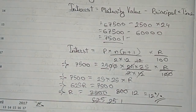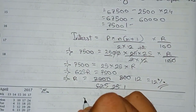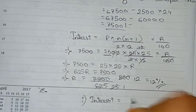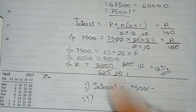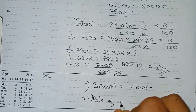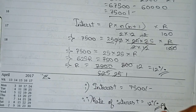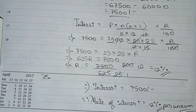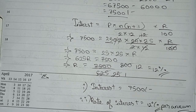So this second process is a simpler one. From both methods we get the same answers: number 1 — interest is equal to rupees 7500, and number 2 — rate of interest is equal to 12% per annum. So these are our final answers for this question. Thanks for watching this video, and please subscribe to my channel for more solutions like this.